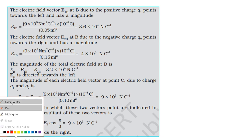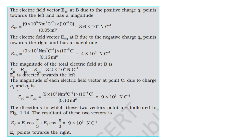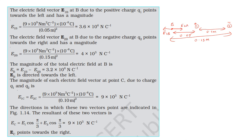At point B, the distance to the first charge is 0.05 m and the distance to the second charge is 0.15 m (since B is 0.05 m outside the pair along the line). The field due to the positive charge at B points away from it, and the field due to the negative charge points toward it — both in the same direction. The net field at point B equals the field due to the positive charge minus the contribution of the negative charge.